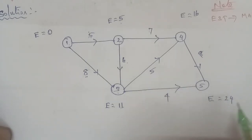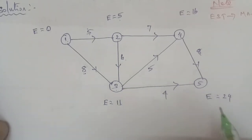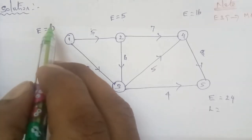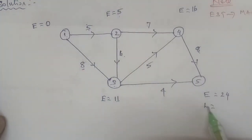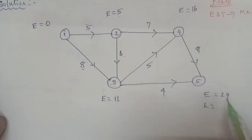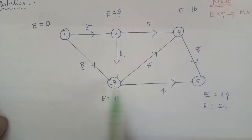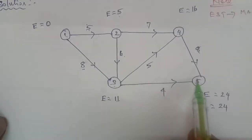Next, we calculate the latest finishing time. The symbol for latest finishing time is L. We work backwards. The initial value for the latest finishing time at the last node equals the earliest start time value, which is 24. So L at node 5 is 24. Working back, node 5 is reached, and we proceed backward through the network.